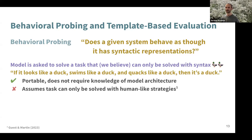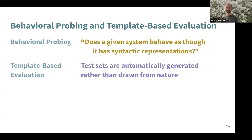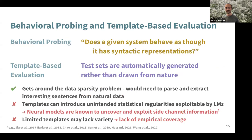But it's a huge assumption that the task can only be solved with human-like strategies. This is generally paired with template-based evaluation, where behavioral probes are done on test sets that are automatically and artificially generated rather than drawn from natural data. This gets around data sparsity — most sentence structures in a language, almost always English, aren't very informative for this question. So instead, you generate a bunch that are. The problem is that artificially generated template data can introduce unintended statistical regularities, and we know that language models are very good at exploiting any statistical regularities they find.